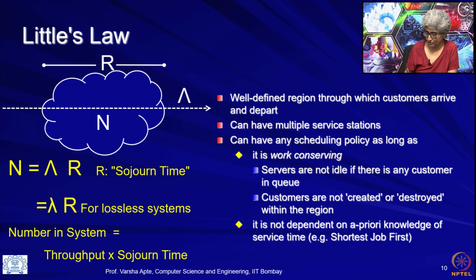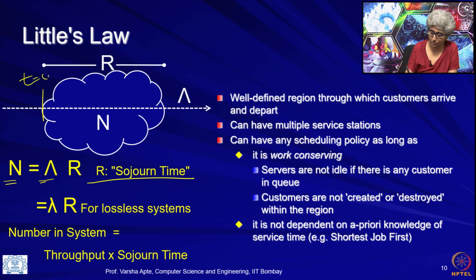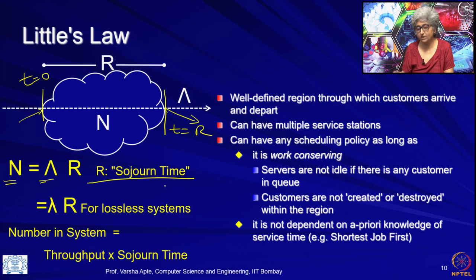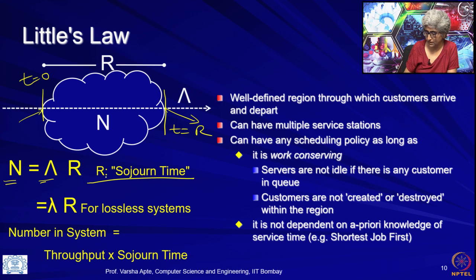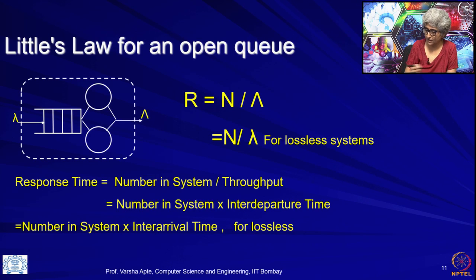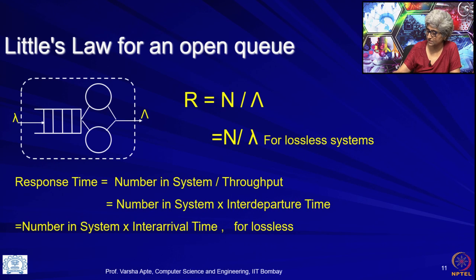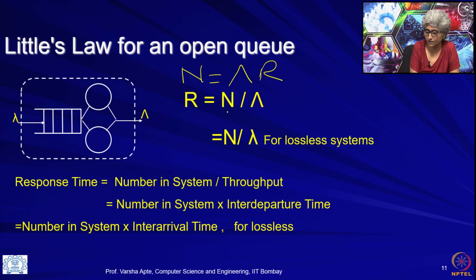The law says that number in system equals throughput multiplied by what is called Sojourn time. Sojourn time is the time from entering the region to departing the region — we call it Sojourn time because in different contexts it may not be called response time. We will apply this to our queuing systems where it is the response time. Rearranging: R equals N divided by throughput. Furthermore, in a lossless system throughput equals arrival rate, so it becomes N divided by lambda.